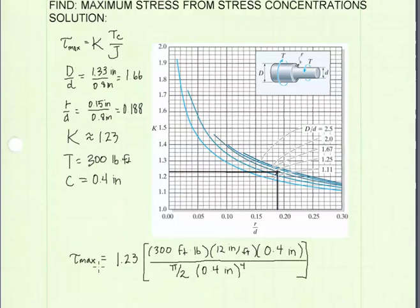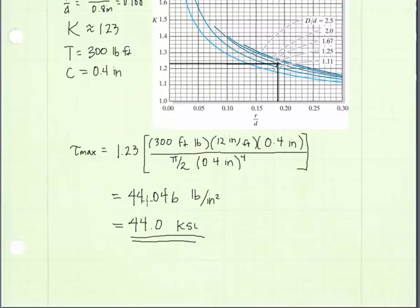I've written the expression for tau max. It's equal to a K value of 1.23, the torque is 300 foot-pounds, and to be able to get the units I want, which is going to be in pounds per square inch, I need to convert feet to inches. So I'll multiply the value by 12 inches per foot. C is 0.4 inches, and J, the polar moment of inertia, is the radius 0.4 inches to the fourth power times pi halves. Solving this gives me a value of 44,046 pounds per square inch, or 44.0 KSI. And we're done.